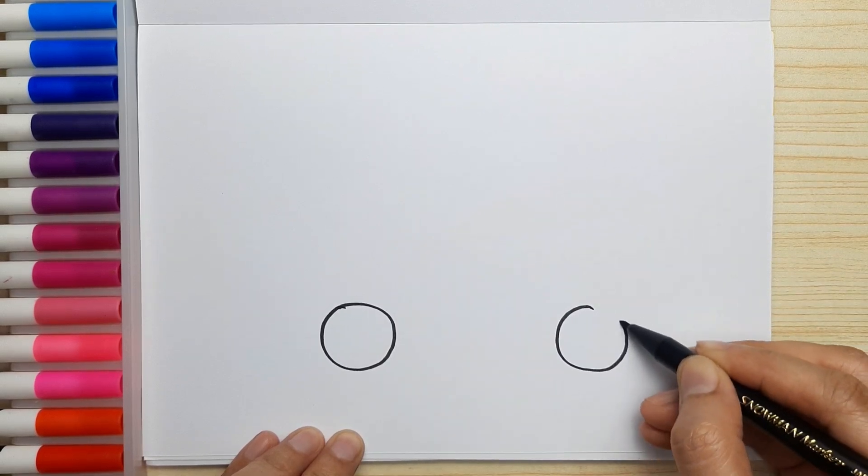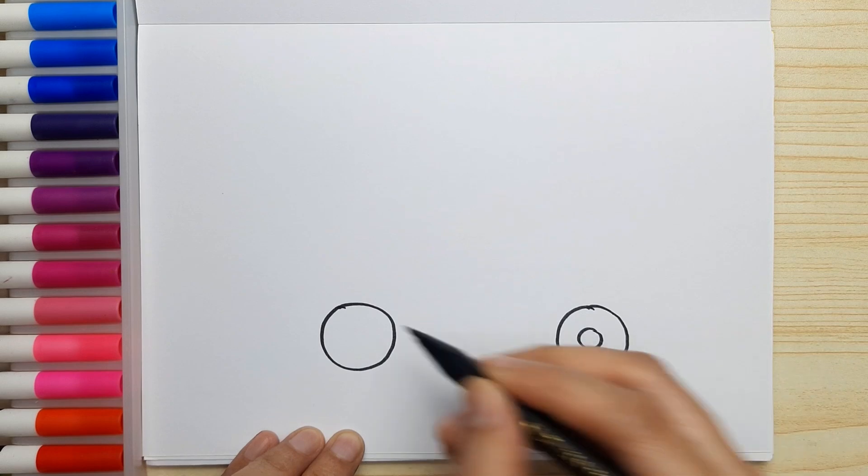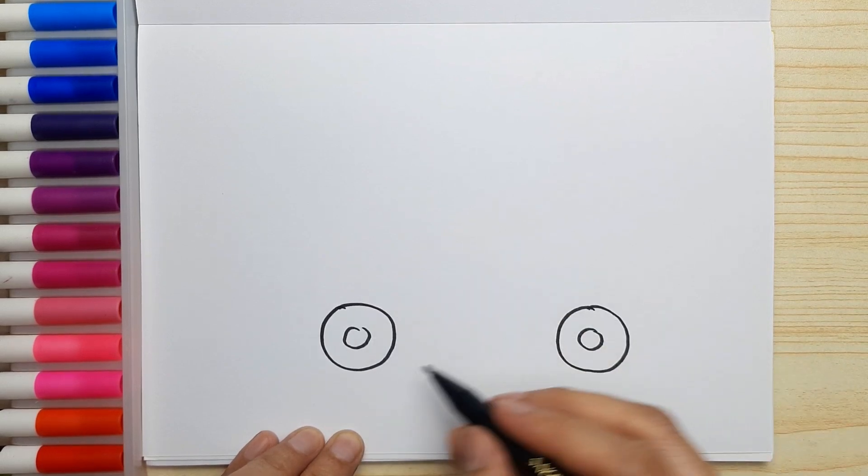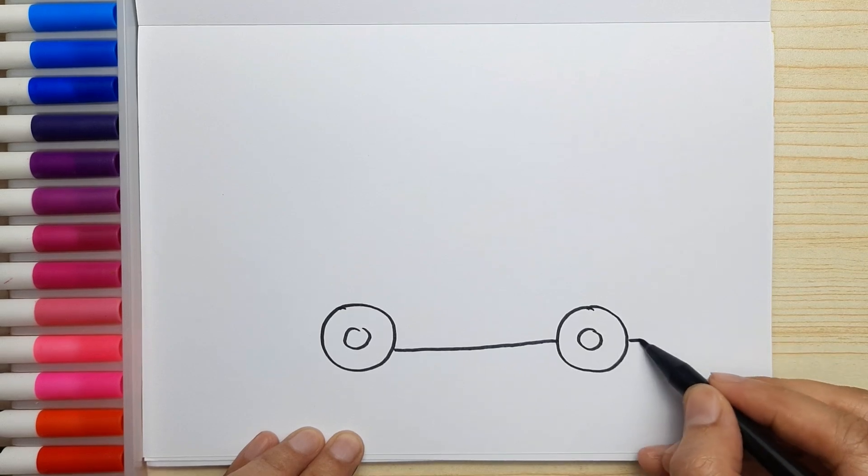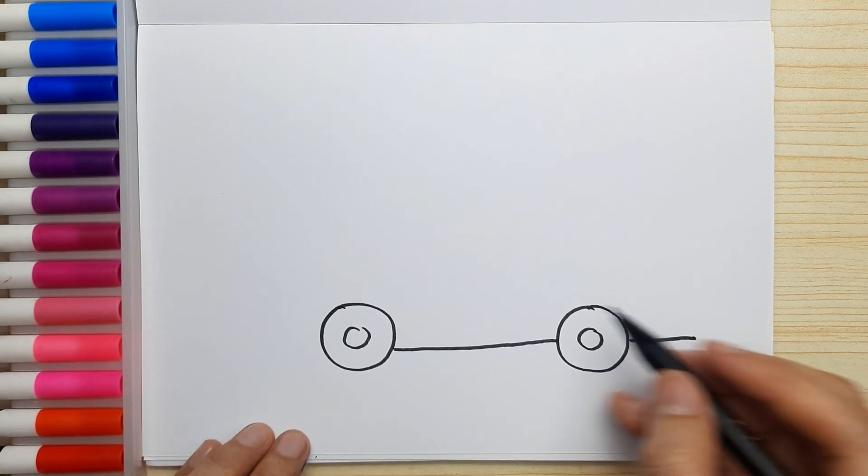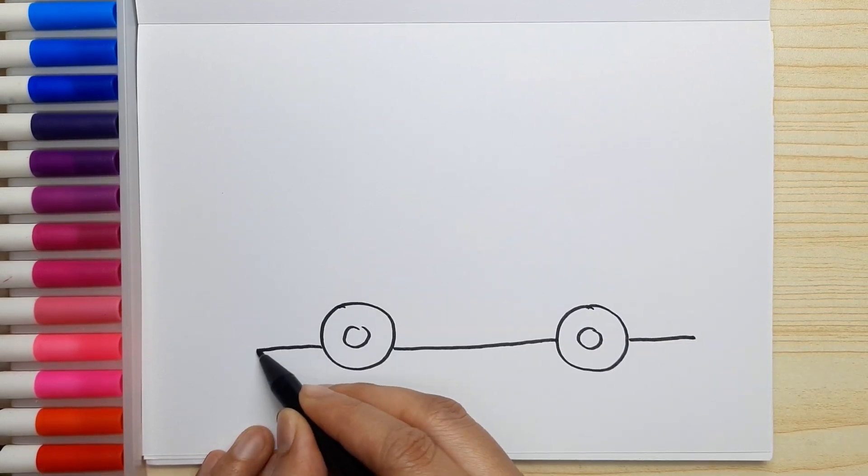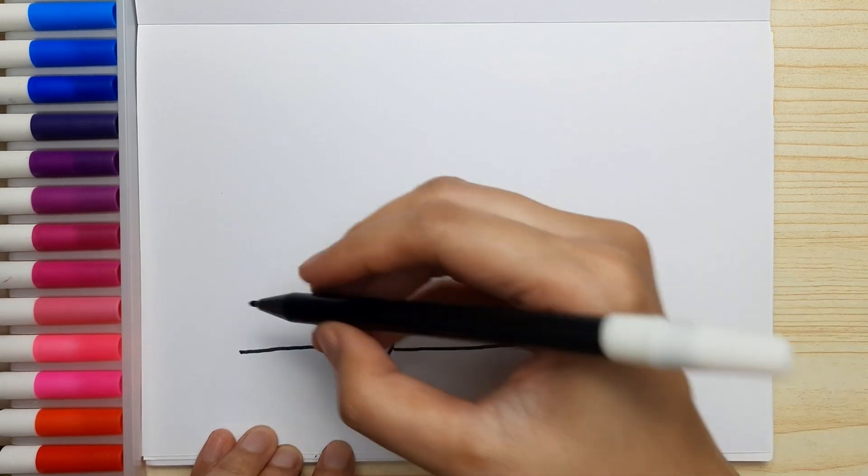First, let's draw the wheels. Connect the wheels and draw the lines at the other side of the wheels and then draw the cab.